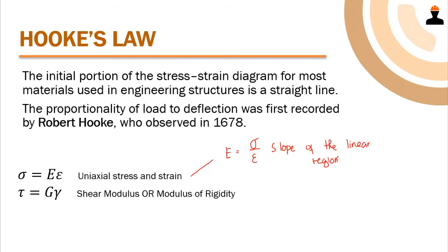We also have the relationship between tau, the shear stress, and the shear strain. The shear stress equals G times the shear strain, where G is the shear modulus, also known as the modulus of rigidity. This formula applies specifically for shear stress.